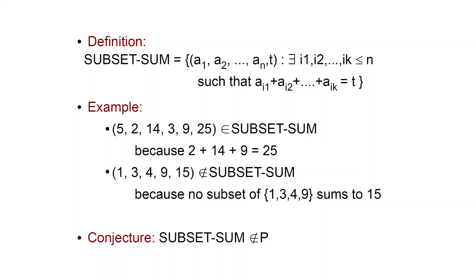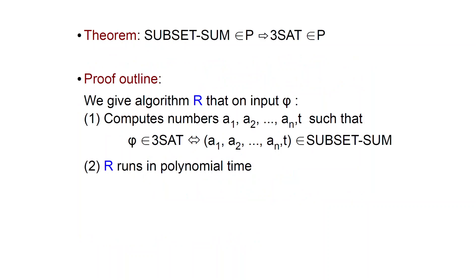You can verify that there is no such subset. The conjecture is that Subset Sum cannot be solved efficiently, and people don't know how to show that. So instead, we are going to prove this theorem: that Subset Sum being solvable efficiently implies that 3SAT is also solvable efficiently.